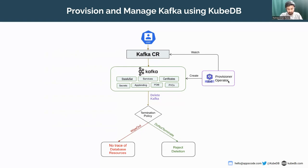KubeDB will create StatefulSets, services, certificates, secrets, AppBindings, PVCs, and persistent volumes for your Kafka as required — you don't need to deploy those workloads separately by hand. If you want to delete your resource, there are two termination policy options: Do Not Terminate and Wipeout. The Wipeout termination policy is for testing and development only. It is recommended to use Do Not Terminate on your production cluster to protect against accidental deletion.